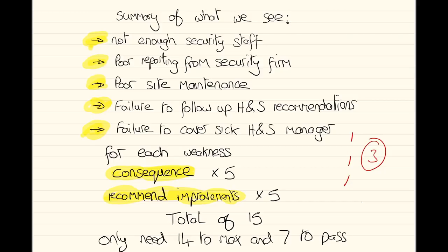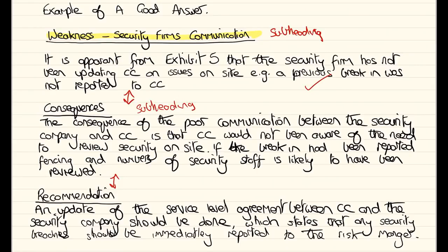In terms of how I develop each weakness into a three-mark answer: I've identified the weakness as a problem with the security firm's communication, created a subheading, left some white space, then created another subheading which falls in line with the question requirements — 'consequence' — and talked about the consequence of having poor security firm communication. I've then left some white space and talked about a recommendation, which might be to update the service level agreement. For that I'd get three marks. We need to get over seven to pass, and I think that is well within all our capabilities.